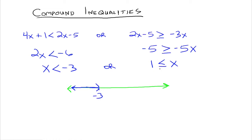For the right inequality, 1 is less than or equal to x means the same as x is greater than or equal to 1. Graphing that on the number line: here's 1, we shade out to the right, and 1 is included so we have a bracket or closed circle. This is the graphical representation of the solutions of this or compound inequality.